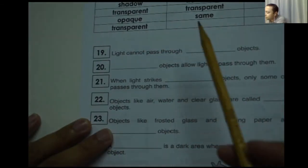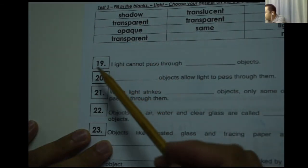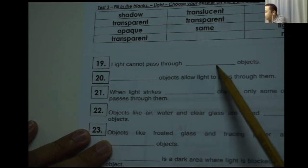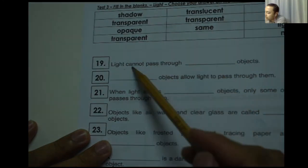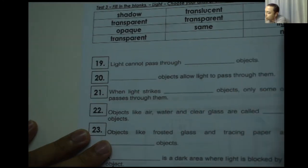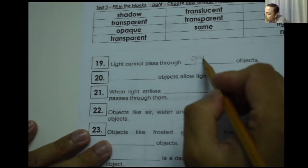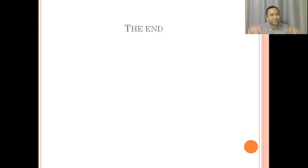You watched the video, so I know you can answer this one. For example, number 19: light cannot pass through blank objects — fill in the blank — so light cannot pass through opaque objects, so you write opaque. That's it — that's the end of our video and I hope you learned something new. See you again in our next video, bye bye!